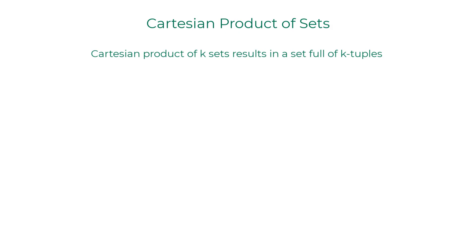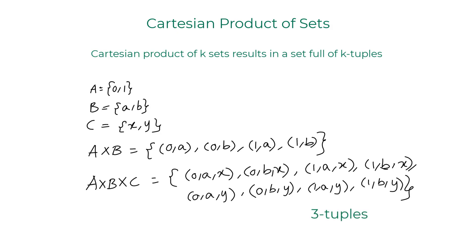In this case, the Cartesian product of k sets will result in the set consisting of all k-tuples. Here is an example of Cartesian product of three sets. First we can apply Cartesian product on two sets and then we end up with this set. We can use that to apply Cartesian product again with the third set and then we end up with the set full of three tuples.